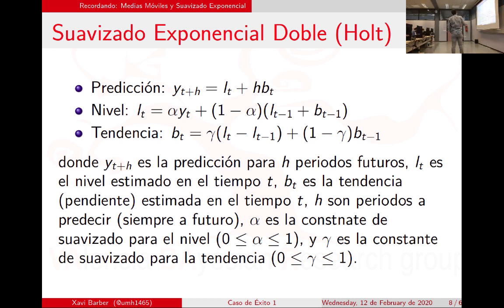Mi predicción de mañana depende de un cierto nivel y de una cierta tendencia. El nivel me lo da el alfa: ¿con quién me relaciono? ¿Solo con mi amigo de ayer o con mis amigos del cole, del instituto, con todos? Eso te lo da el alfa. Y si voy a tener más o menos amigos me lo va a dar el gamma —el beta en concreto aquí.